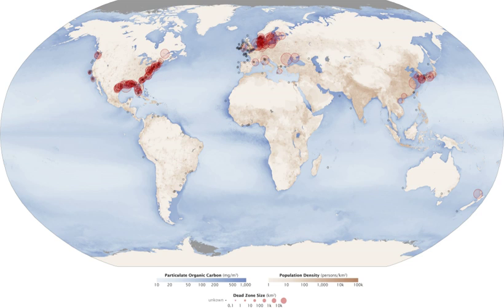Natural oceanographic phenomena can also cause deoxygenation of parts of the water column. For example, enclosed bodies of water such as fjords or the Black Sea have shallow sills at their entrances, causing water to be stagnant there for a long time. The eastern tropical Pacific Ocean and northern Indian Ocean have lowered oxygen concentrations in regions where there is minimal circulation to replace the oxygen that is consumed. These areas are also known as oxygen minimum zones (OMZs).